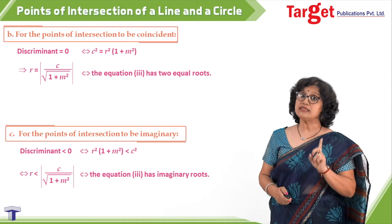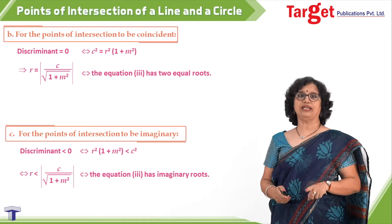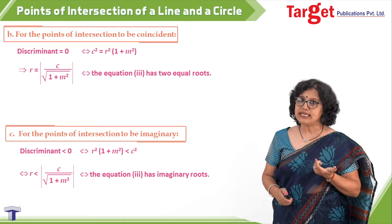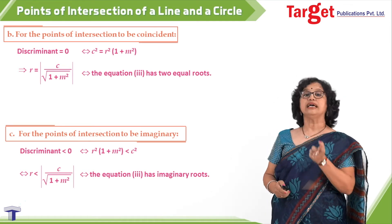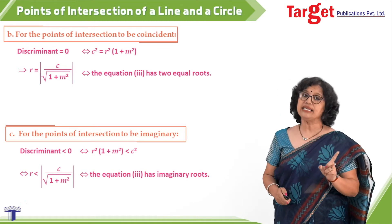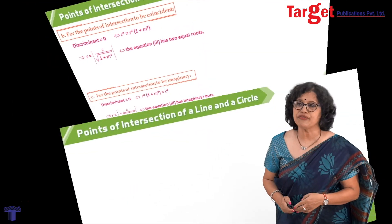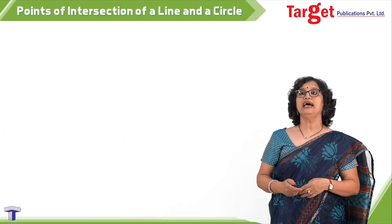We have found conditions in terms of r, c, and m — where m is the slope of the line, c is the intercept of that line, and r is the radius of the circle.